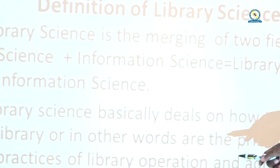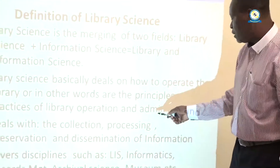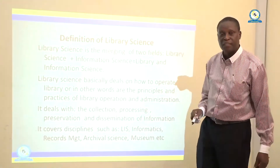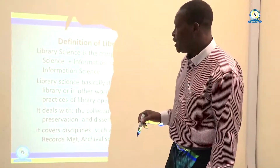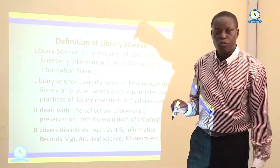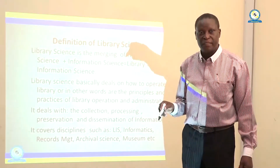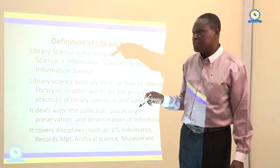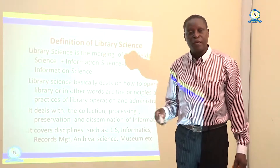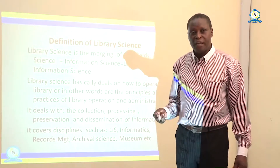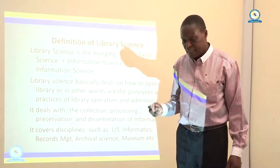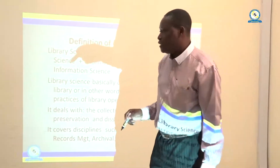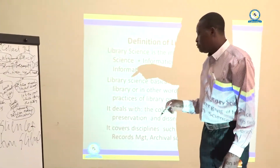There is also the question of organizing the information. Why should we process information? We process information in order to make it easy to retrieve. Basically, if you do not process information, it is like being in a jungle — it won't be easy for users to know which information is required. That is where the issue of processing comes in.